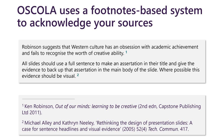Wherever some evidence is used in text, a superscript number is used to flag where that evidence links to. Then, at the bottom in the footnote area, full details are provided for that source — enough for a reader to be able to find it themselves. The numbers in the text link to the numbers at the bottom of the page, and Microsoft Word's Insert Footnote tool can help you automate this.